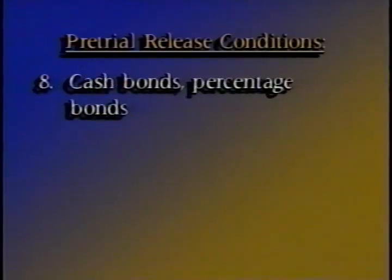Cash bonds and percentage bonds are also alternatives to detention in cases where the defendant has the resources to post such bonds. Both give the defendant a stake in appearing for trial and complying with conditions of release. Under the Bail Reform Act, a cash or percentage bond should not be set as a condition where the defendant is clearly unable to post the particular amount — taking that route means avoiding your responsibility either to allow release on conditions that can be met or to order detention.